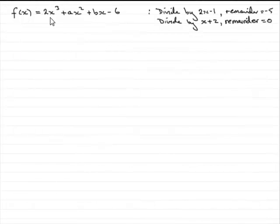We're given that f of x equals 2x cubed plus ax squared plus bx minus 6, and we're told that if we divide f of x by 2x minus 1, there's a remainder of minus 5, and if we divide it by x plus 2, there's a remainder of 0.